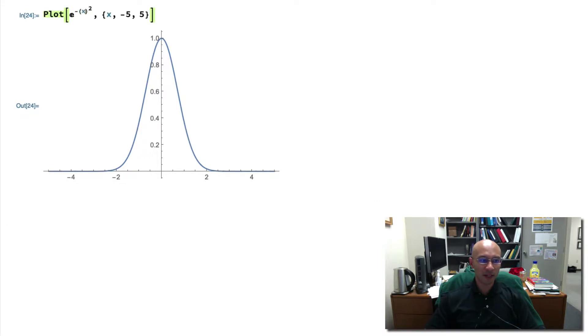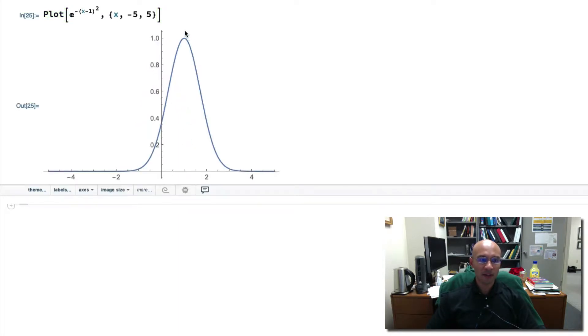If in the parentheses here I put a negative 1, x minus 1, that shifts the whole Gaussian to the right. Let's see that. And now its mean value is at x equals 1. And, of course, if I did it using 2, then the Gaussian shifts over to center its mean at 2.